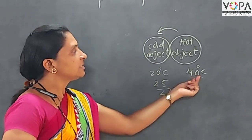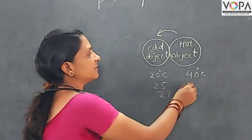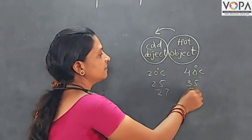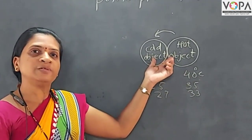Likewise the temperature of hot object becomes decreasing. Means like when we have 35. Then 33 and so on. So what happened after some time?